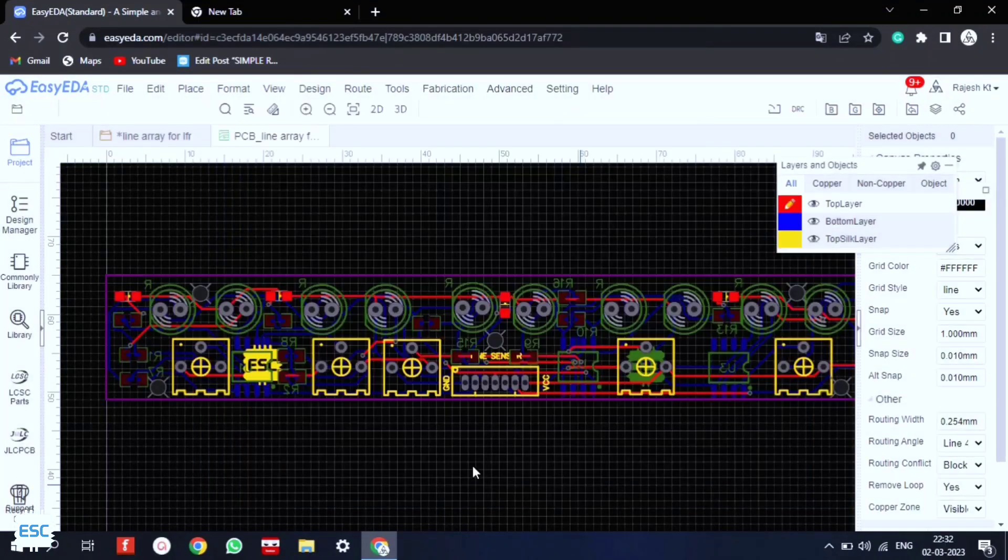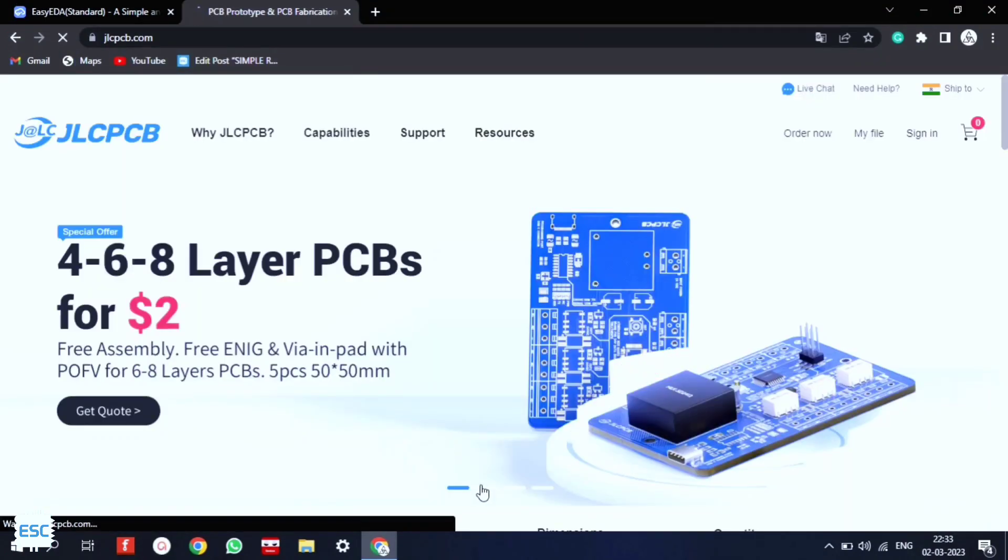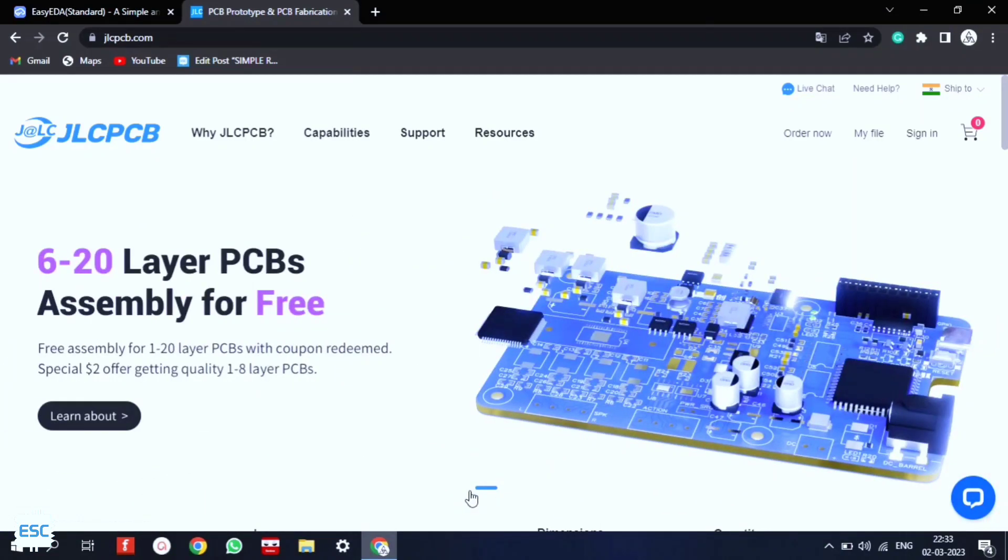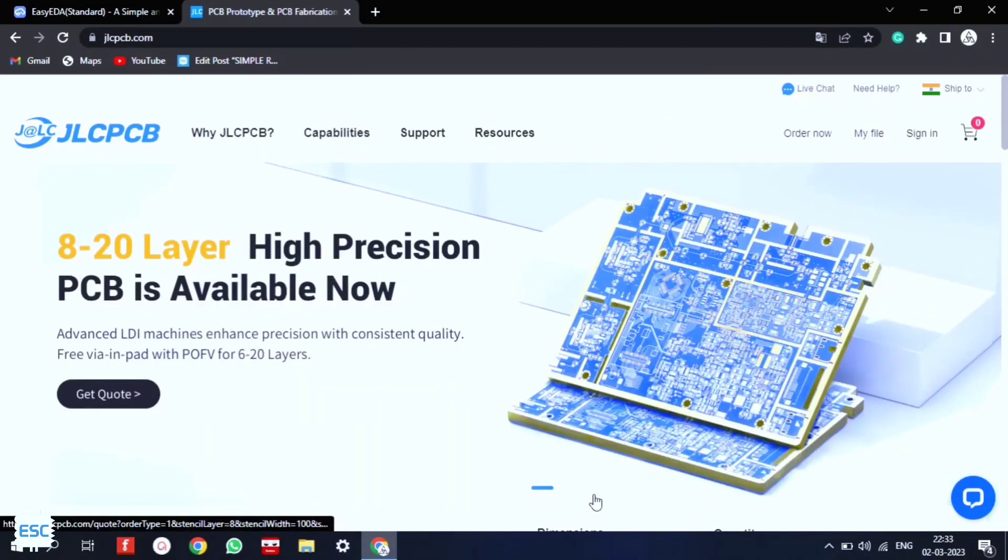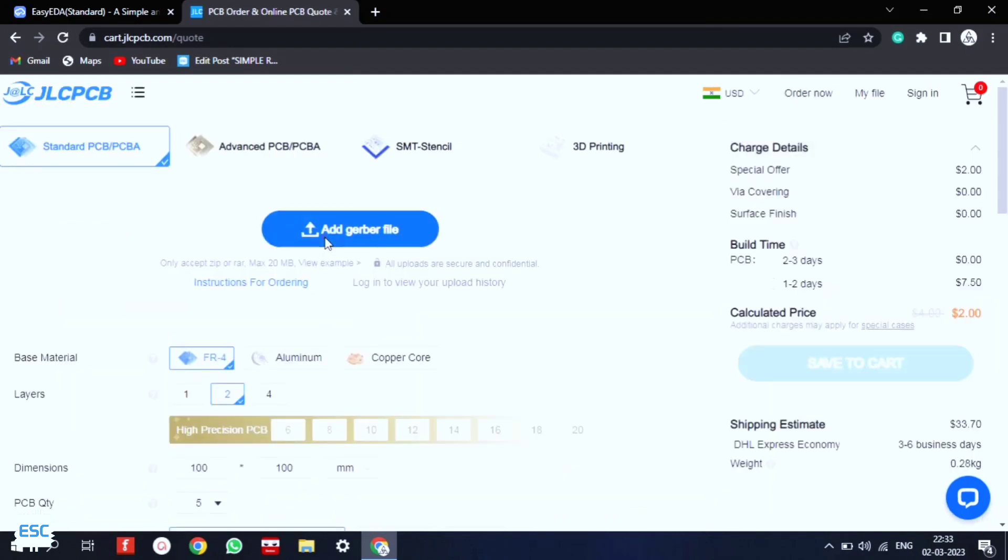Now to fabricate the PCB, I generated and downloaded the Gerber files. Then I went to JLCPCB.com to fabricate the PCB. I chose JLCPCB because they offer only two dollars for five good quality PCBs, and their PCB assembly starts from zero dollars.